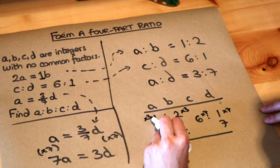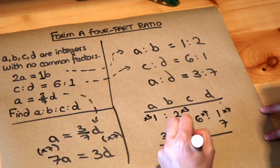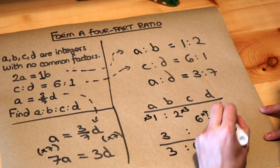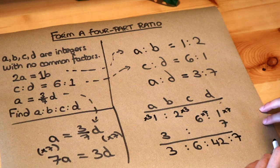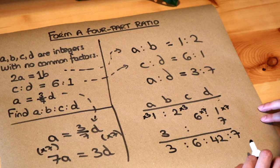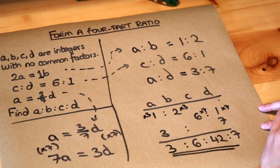So let's do all of that. We've got 1 times 3 is 3, 2 times 3 is 6, 6 times 7 is 42, and 1 times 7 is 7. So now we've managed to combine that into one big ratio. So that is the answer. The ratio A to B to C to D is that ratio there.